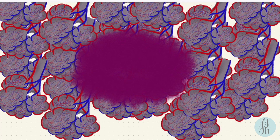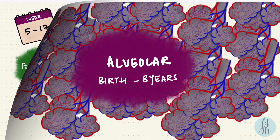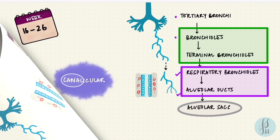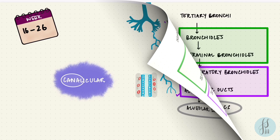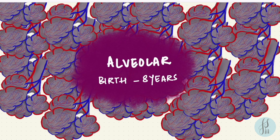These are still primitive alveoli that must mature and proliferate — we need millions and millions. That's the alveolar stage, from birth to 8 years, where they mature and proliferate. So those are the four stages of lung maturation: the pseudoglandular stage when it looks like a gland, the canalicular stage when it looks more like a lung, the saccular stage when alveolar sacs form, and the alveolar stage when alveoli proliferate.